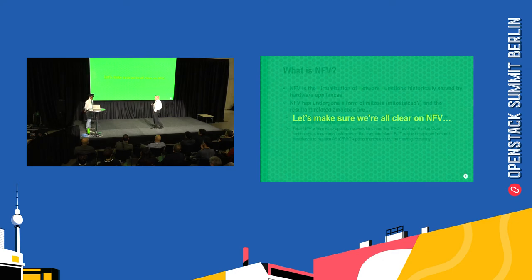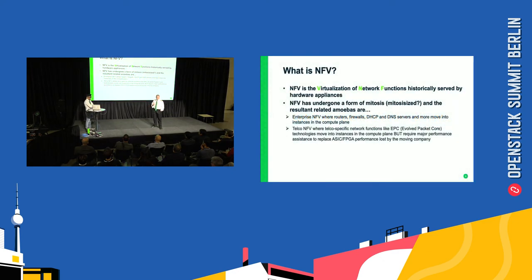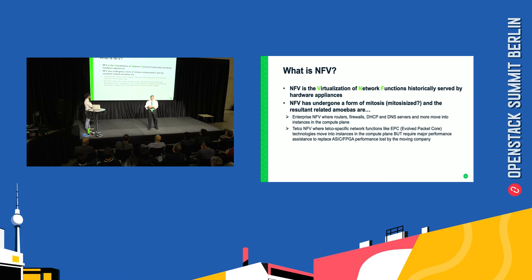Let's make sure we're clear on NFV. What is NFV? It is the virtualization of network functions. Put very simply, NFV is about taking stuff that used to run in an appliance — a specific telco appliance — taking the software out of that box and running it in a Linux process somewhere. Fundamentally, at its core, that's what NFV is all about. You can download the slides, and you can go back for a more detailed discussion of this from the previous talk.